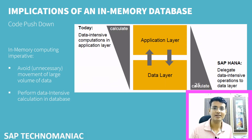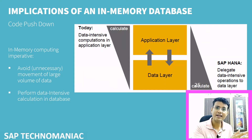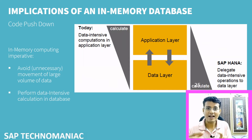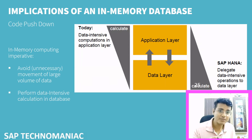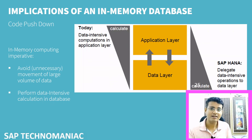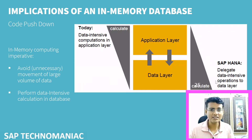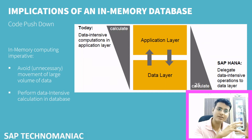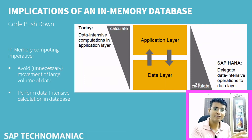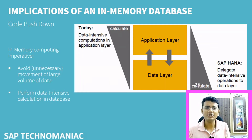But now the picture has changed. We have to do most things at the database level itself. Instead of getting everything from the database to the application server and processing there, we should process on the database — for example, get minimum data after processing. In the world of HANA, since our database is powerful, we should do summations, joins, and calculations on the database itself.